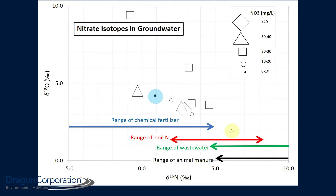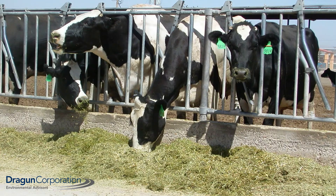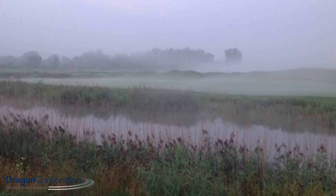Research has shown that when you look at the nitrate in groundwater underneath a place where there has been no grazing and no cows — where you'd have manure — you get a different isotopic signature than you do if you have a field where the groundwater below has just been affected by chemical fertilizers.